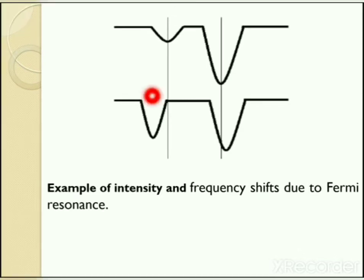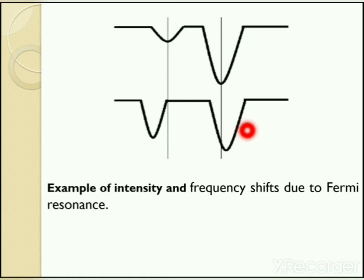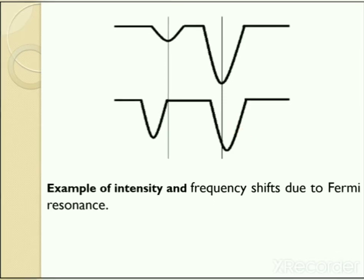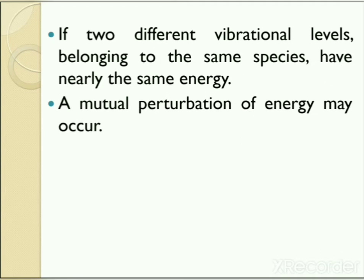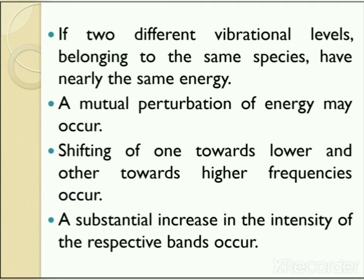Intensity and frequency shifts occur due to Fermi resonance. Here you can see this band shifts to the lower frequency region, while this band shifts to the higher frequency region. We can say that if two different vibrational levels belonging to the same species have nearly the same energy, a mutual perturbation of energy may occur which shifts one towards lower and the other towards higher frequencies. This effect is known as Fermi resonance.